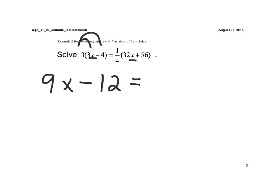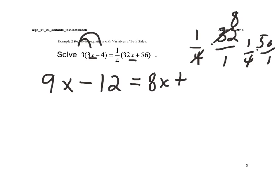Now I have to take 1 fourth times 32x. So 1 fourth times 32 over 1. And if we cross-cancel, we get 8. So that becomes 8x plus. Now I have 1 fourth times 56 over 1. And again, 4 goes into 56, 14 times. So then I have plus 14.